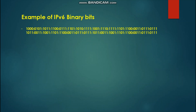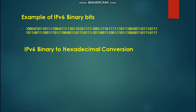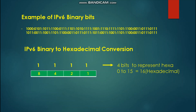Now let us have an example of IPv6 binary bits and perform IPv6 binary to hexadecimal conversion. We will be needing a table for 4 bits. These 4 bits represent hexadecimal. When you add all these numbers — 8, 4, 2, 1 — the total is 15. Counting from 0 to 15 gives a total of 16, and 16 is the base of hexadecimal.